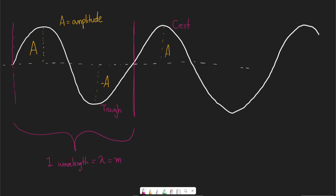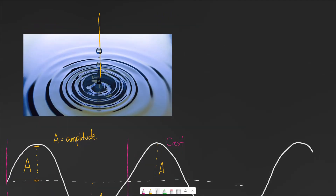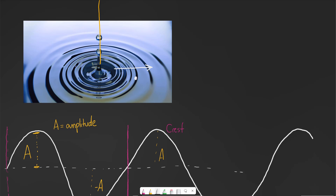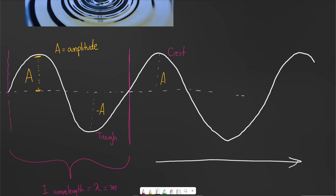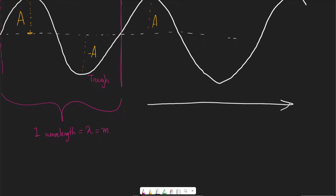So we've drawn amplitude and wavelength. Next, we have frequency. This wave is moving — it propagates in the same way the ripples in the pond move outward. If we were to monitor a particular point and watch waves moving through it, we'd want to see how fast the wave is moving. We measure the number of crests — or wavelengths — that pass through a given point every second. That is what we call frequency.